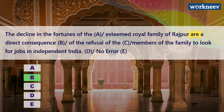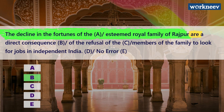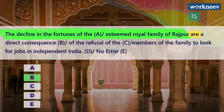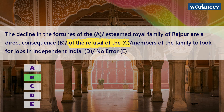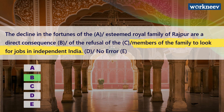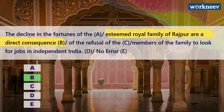Coming back to the question, the subject is 'the decline in the fortunes of the esteemed royal family of Rajpur' — this is a singular subject; the sentence is talking about 'the decline.' If the subject were 'the decline in fortunes and the depletion in respect of the esteemed royal family,' that would be plural. Since the subject is singular, the verb must be singular, and the singular form of 'are' is 'is.' The other parts of the sentence have no error, so the correct answer is option B.